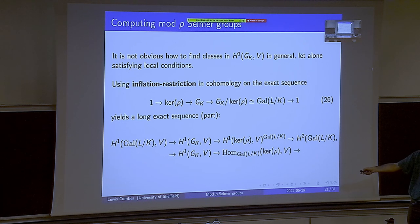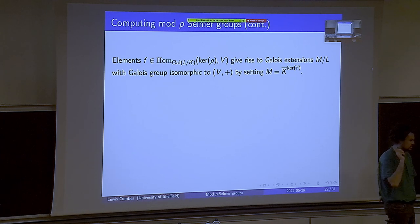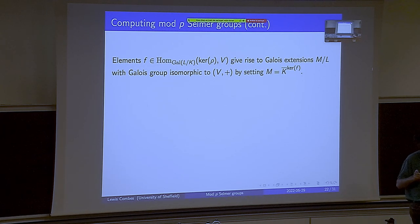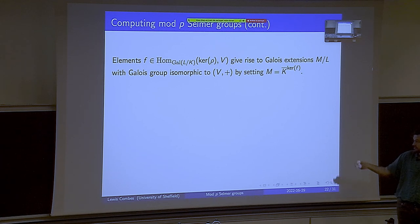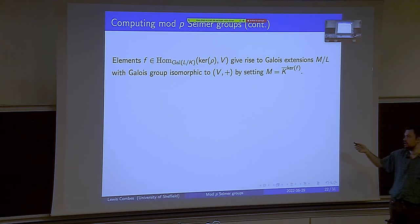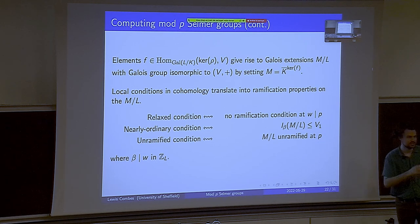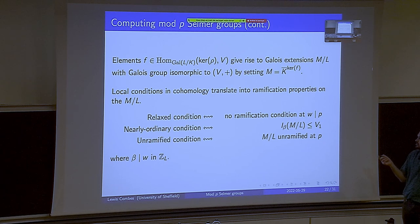Elements in this homomorphism group give rise to Galois extensions M of our number field L, where the Galois group of M over L is isomorphic to V as an additive group — for our purposes, V is F_p plus F_p, so just an additive abelian group. Our local conditions in cohomology translate into ramification properties of the extension M over L. These seemingly weird and opaque cohomological conditions actually have fairly nice interpretations in the number field setting.